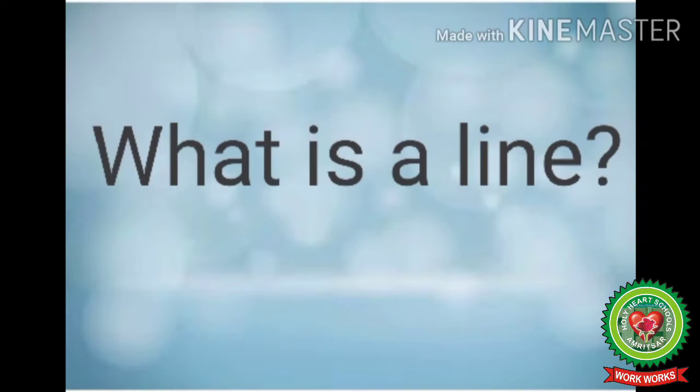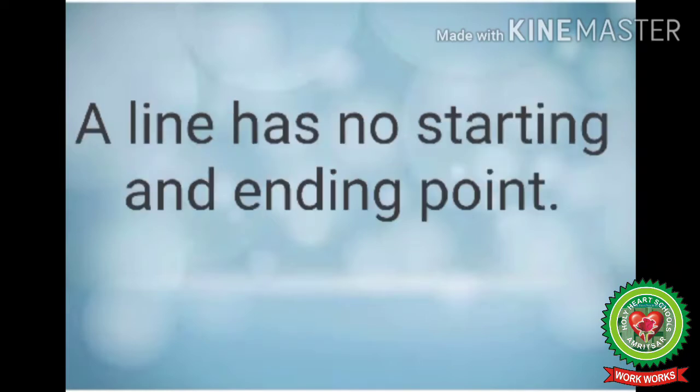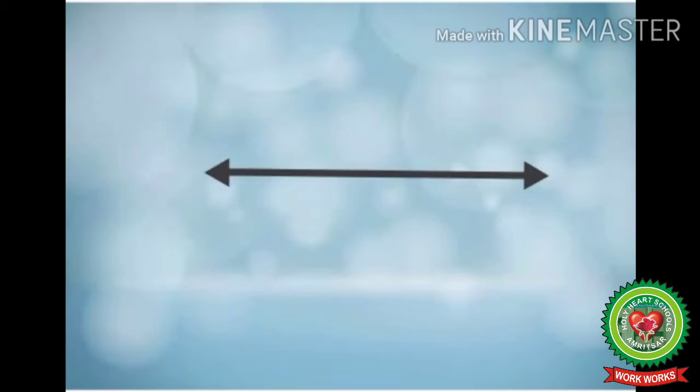Now first I will tell you what is a line. Kids, a line has no starting and ending point. See children, this is a line which has arrows on both the sides. It means you can extend it from both the sides and we can name it as AB in capital letters.